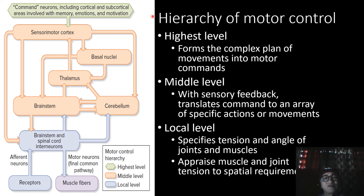The motor programs are continuously adjusted during the course of most movements. As the initial motor program begins and the action gets underway, brain regions at the middle level of the hierarchy continue to receive a constant stream of updated afferent information about the movements taking place. Afferent information at the local level about the position of the body and its parts in space is continually updating the commands at the higher motor centers. This is called proprioception.